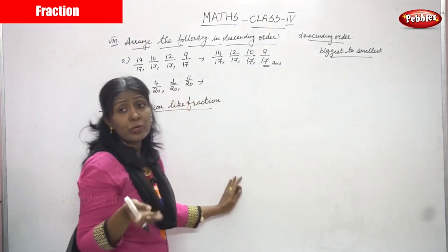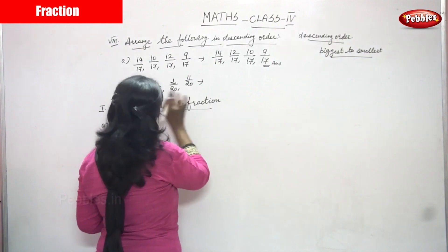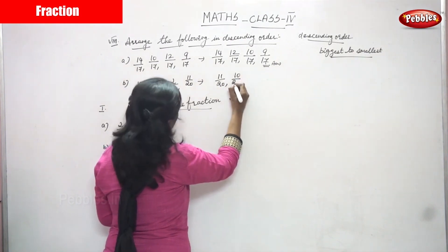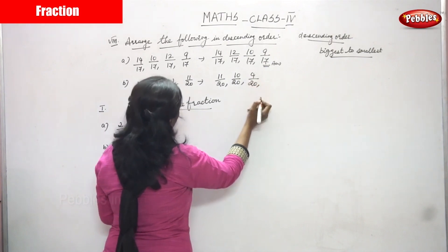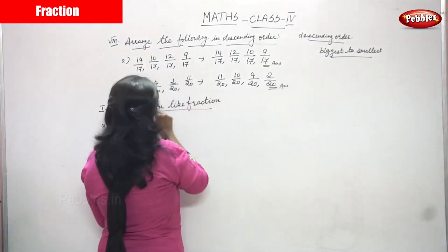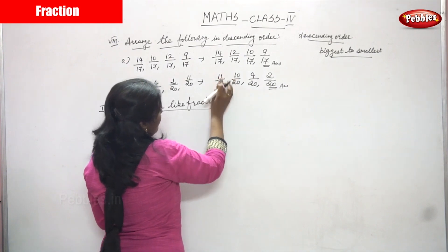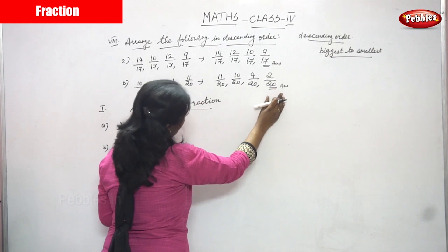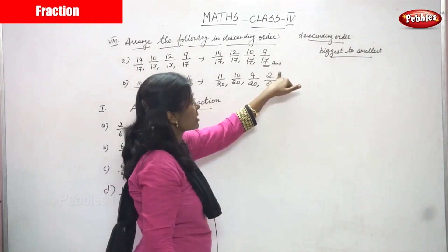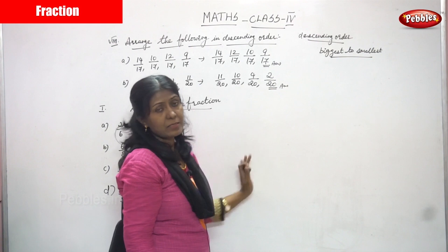So you have to arrange in descending order. If you want to arrange in descending order, you have to start with the biggest number and end with the smallest number. Which one is the biggest fraction here? It's 11 by 20. Next is 10 by 20, next is 4 by 20, and the last is 2 by 20. So the proper descending order is: 11 by 20, 10 by 20, 4 by 20, 2 by 20. That is the right answer for this question.